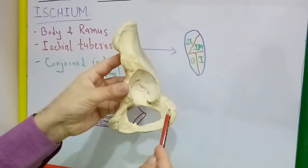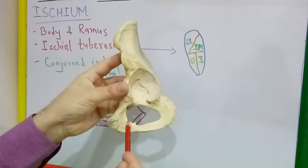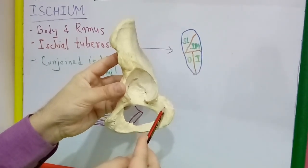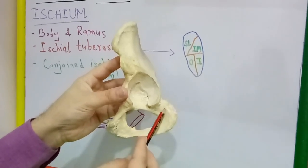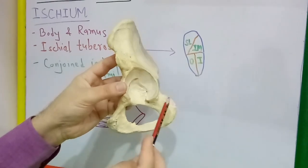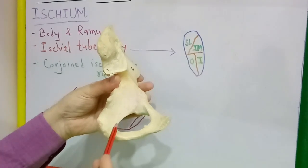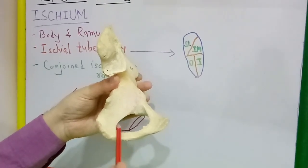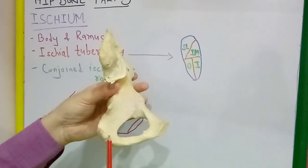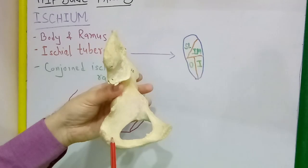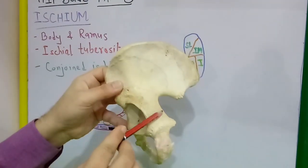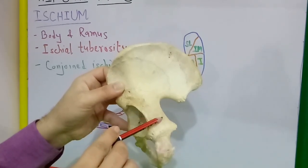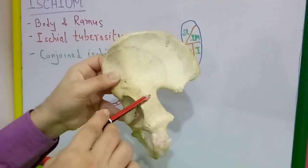Coming to the femoral surface: along the margin of the obturator foramen there is the origin of obturator externus muscle, whereas along the upper part of the lateral margin of the ischial tuberosity there is origin of quadratus femoris muscle. Coming to the pelvic surface: along the margin of the obturator foramen there is origin of obturator internus muscle. The lower end of the pelvic surface is part of the lateral wall of the ischiorectal fossa. On the dorsal surface, the convex upper part is related to the piriformis muscle, sciatic nerve, and nerve to quadratus femoris muscle.